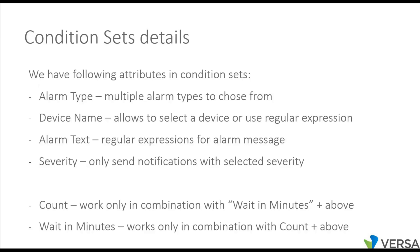Condition sets can contain multiple attributes or conditions. Alarm type signifies what is happening — it might be interface went down, BGP session down or up, or out of memory on a device or the director. Device name lets you specify the actual device that needs to generate the event, or use a wildcard to match a certain group of devices. Alarm text allows matching based on certain criteria using wildcards. Severity allows generating notifications when the severity is above a certain level.